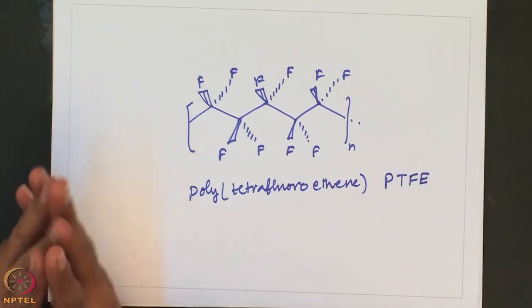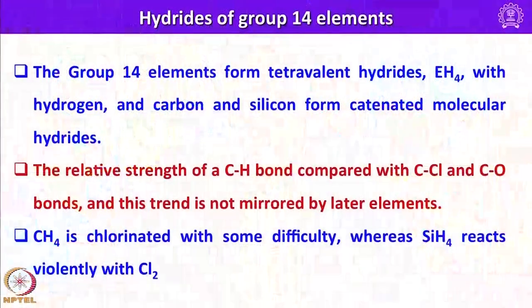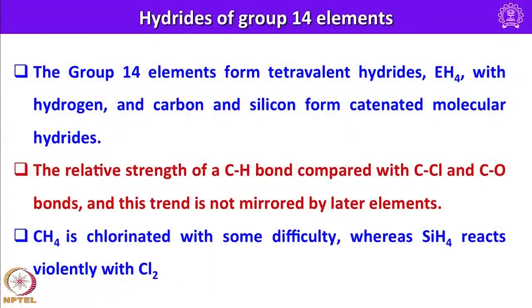For silicon, a large number of higher halides are known containing chains of silicon atoms analogous to the polysilanes. Germanium, tin and lead form few analogues of the silicon compounds because of the lower stability of E-E bonds going down the group and the increased stability of the divalent halides.